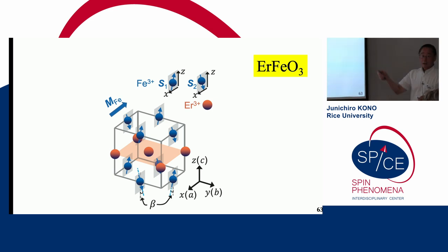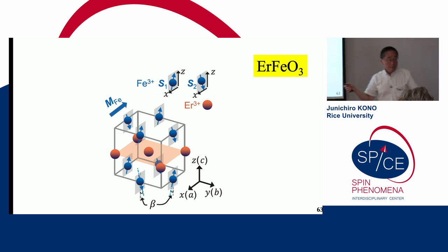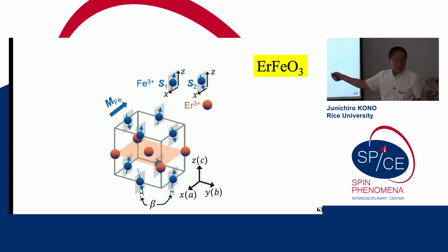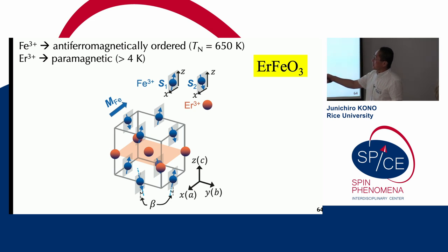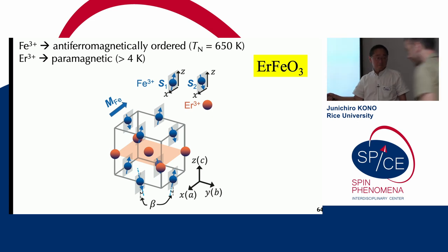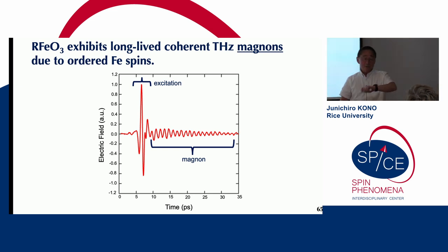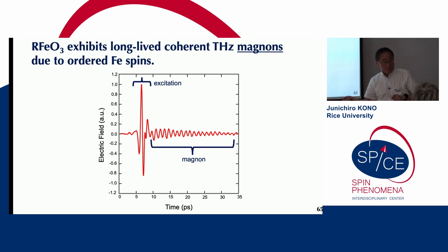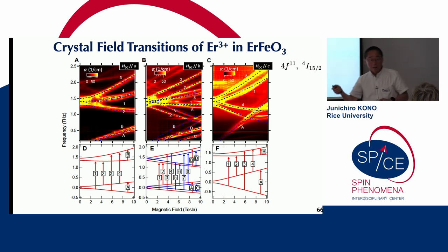The particular system we are working on is a rare-earth orthoferrite, erbium iron oxide (ErFeO₃). This is a unique magnet system containing two magnetic subsystems: iron spins and erbium spins, which strongly interact with each other. The iron spins antiferromagnetically order at 650 K, very high temperature, so in all our experiments iron spins are ordered. The erbium spins remain paramagnetic down to 4 Kelvin. We do terahertz spectroscopy, and the iron spins produce beautiful magnon oscillations in the terahertz regime, while the erbium spins show various crystal field transitions in the terahertz regime.